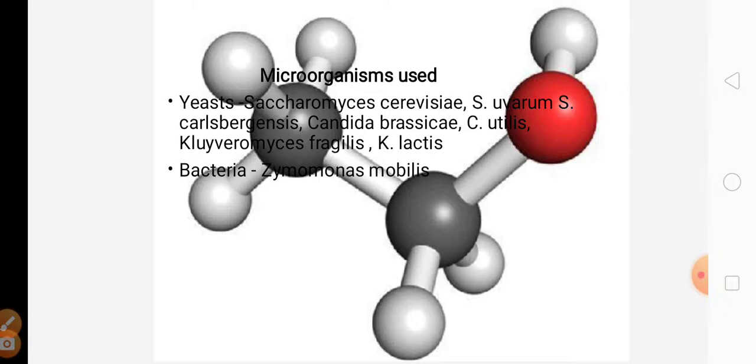Zymomonas mobilis, which is the bacteria used for production of ethanol, has osmotic tolerance to higher sugar concentration. Hence, it is also one of the widely used microorganisms for ethanol production.